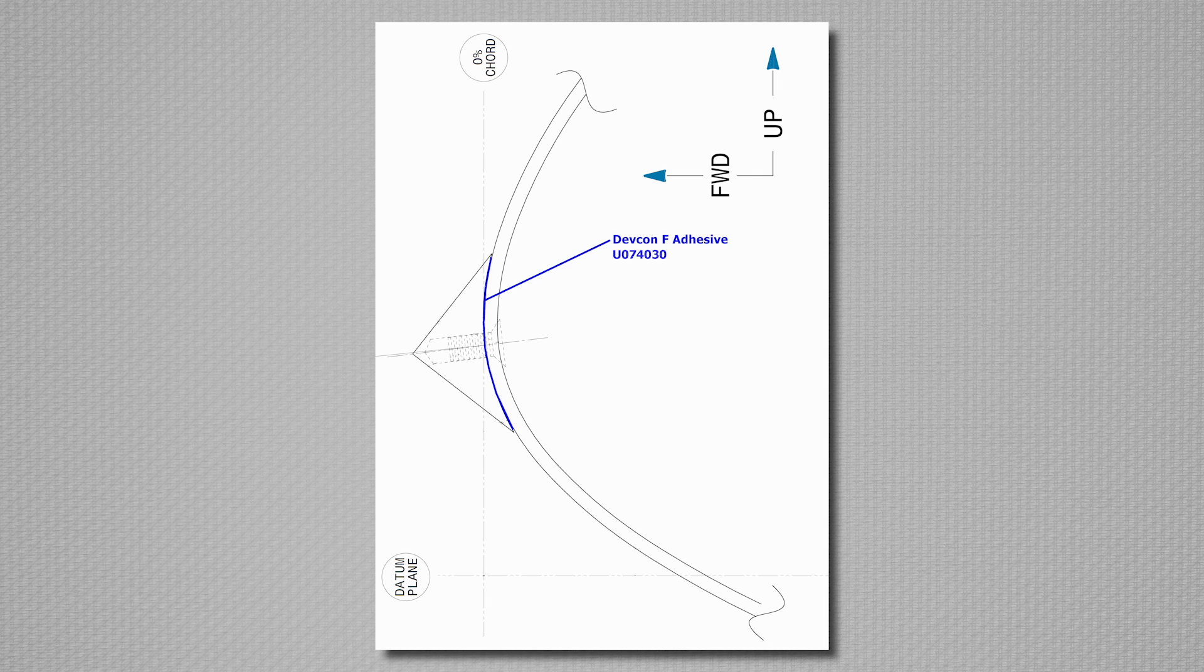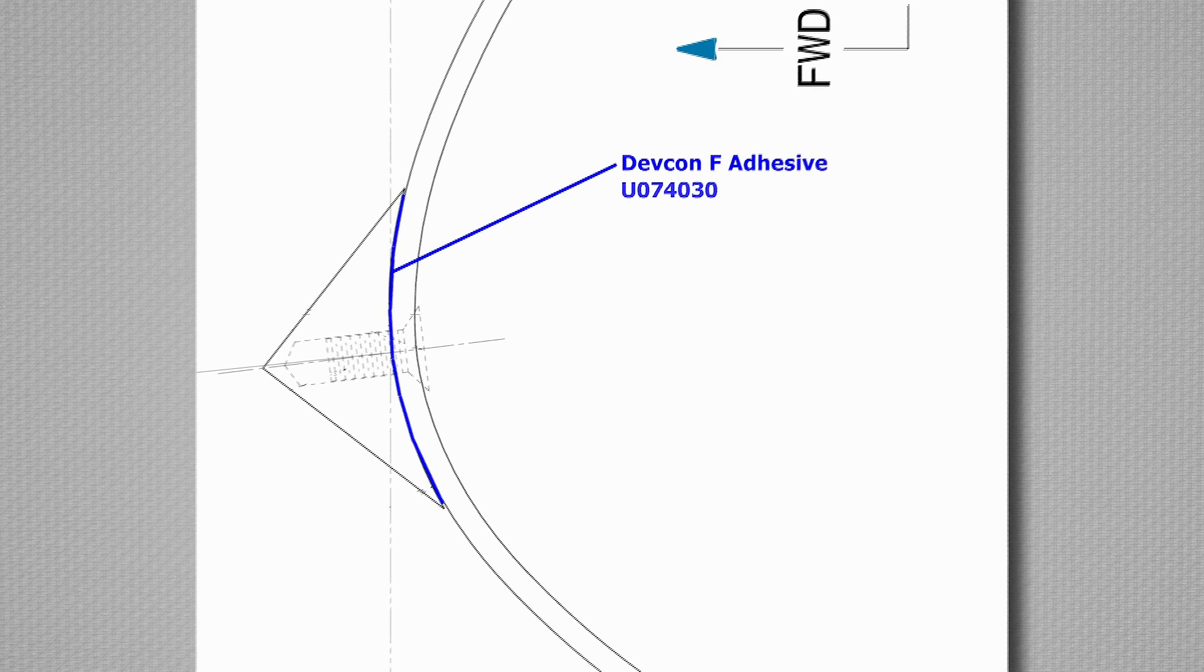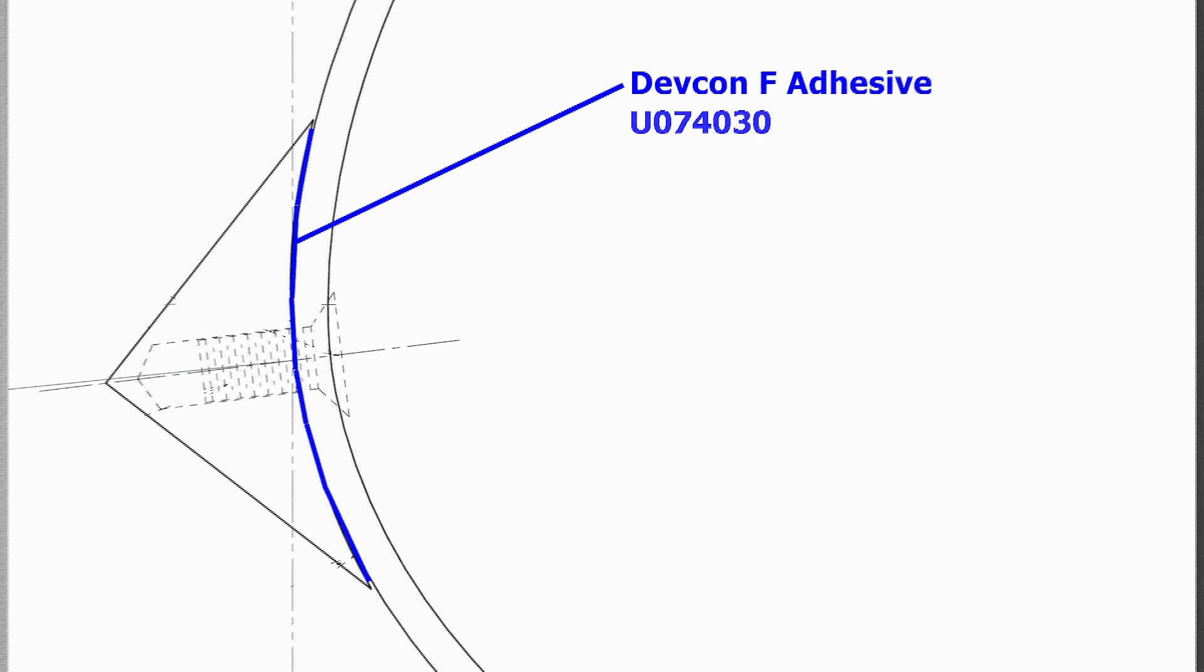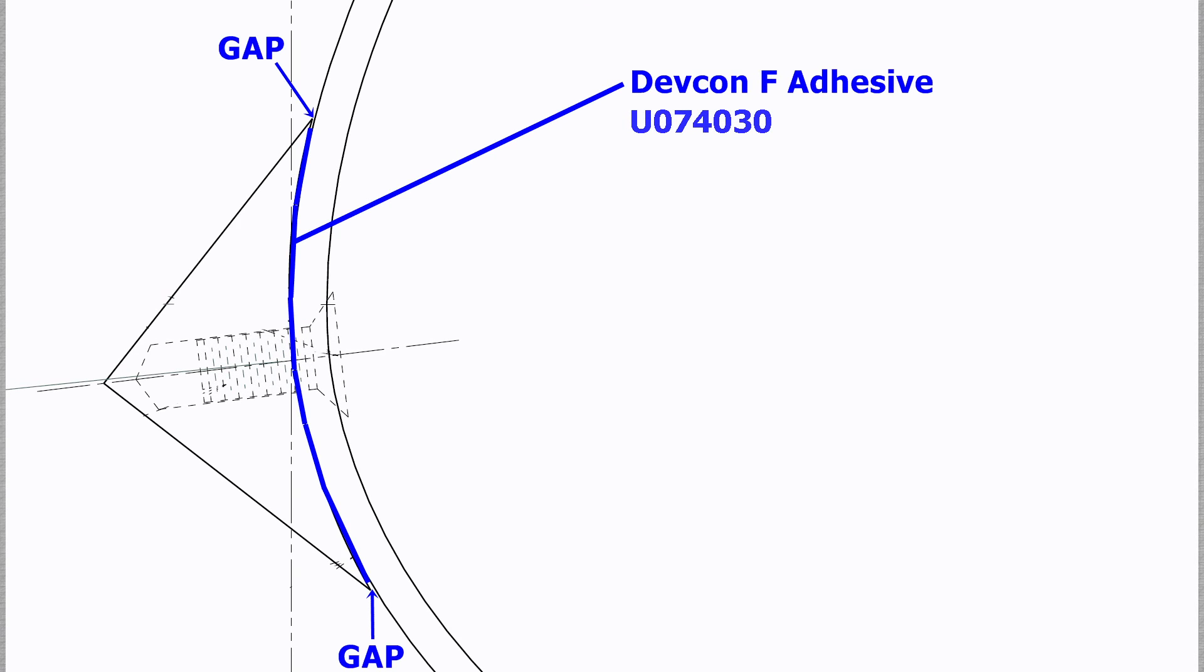The primary bond for the strip to the leading edge is DEVCON-F Adhesive. This is an aluminum bond putty that can also be used to fill holes or gaps in the stall strip as well.